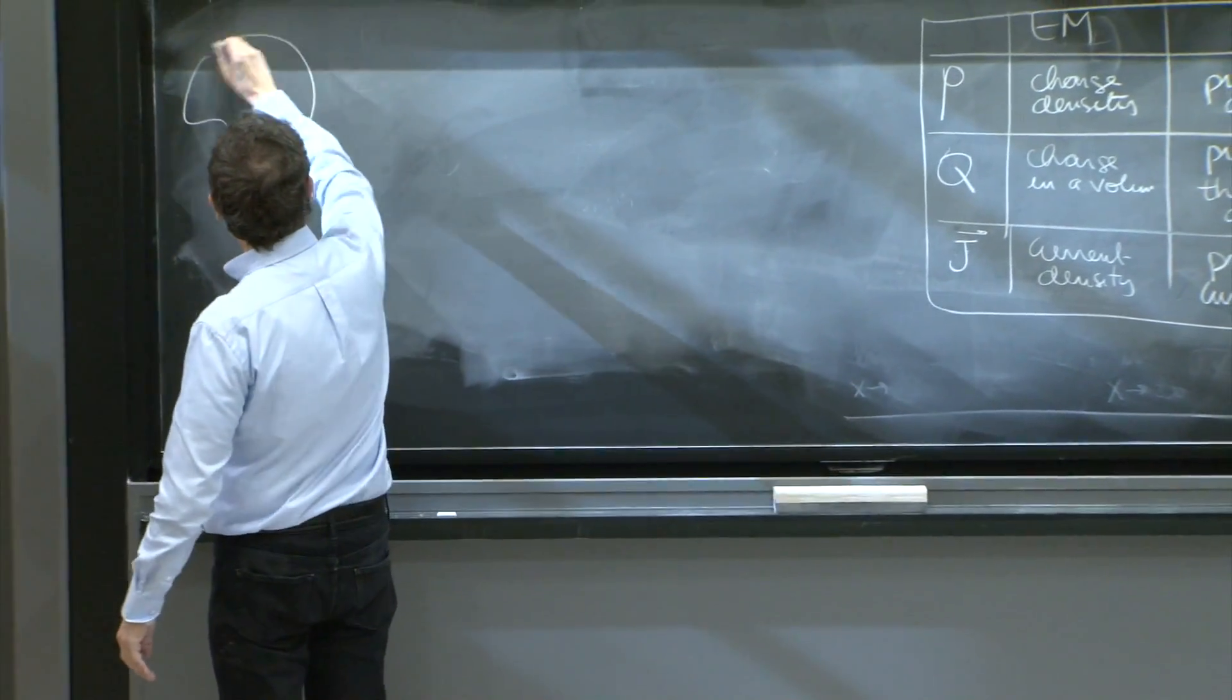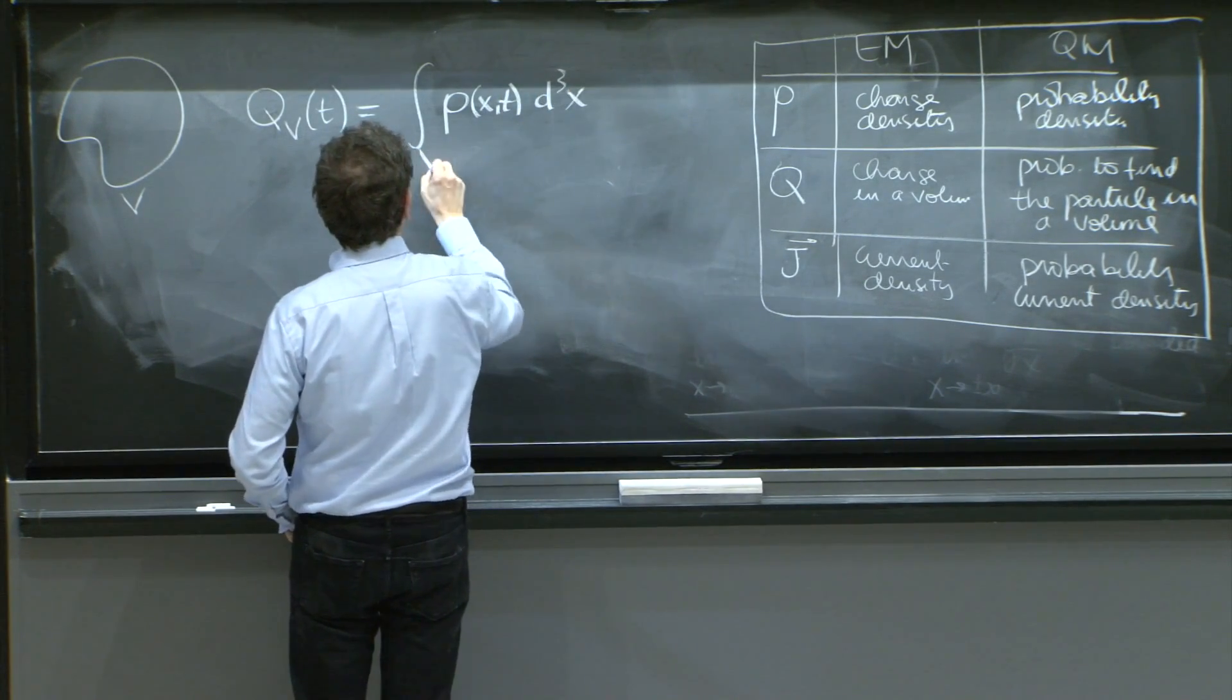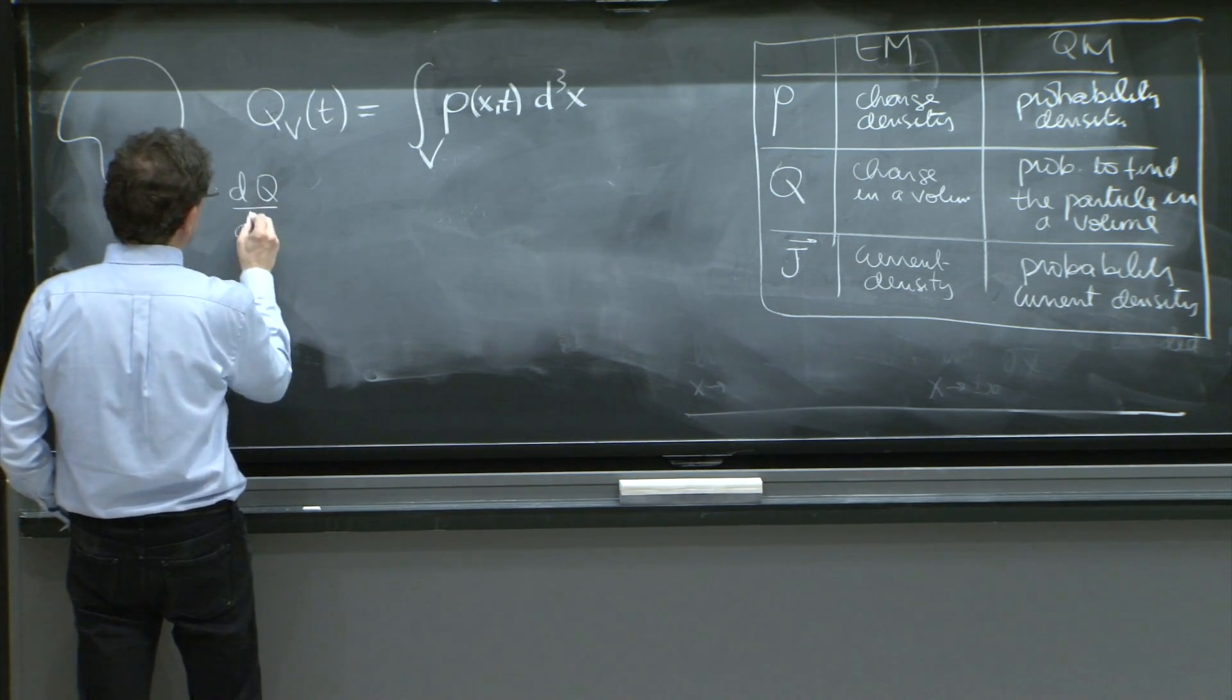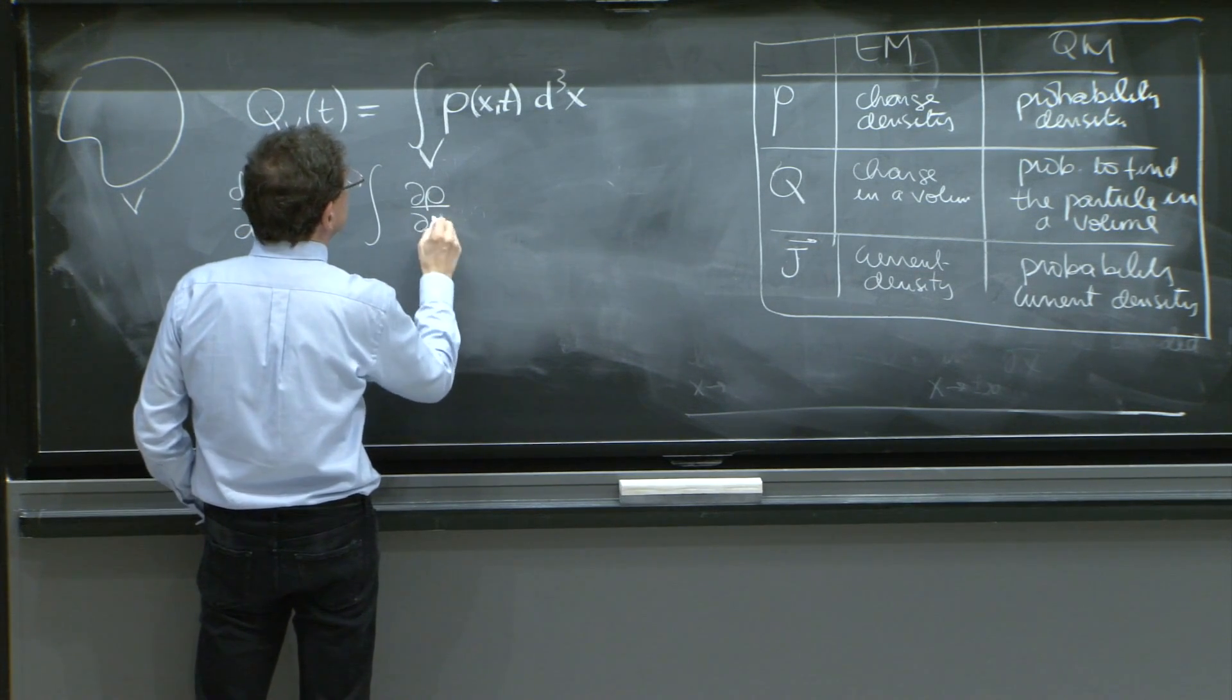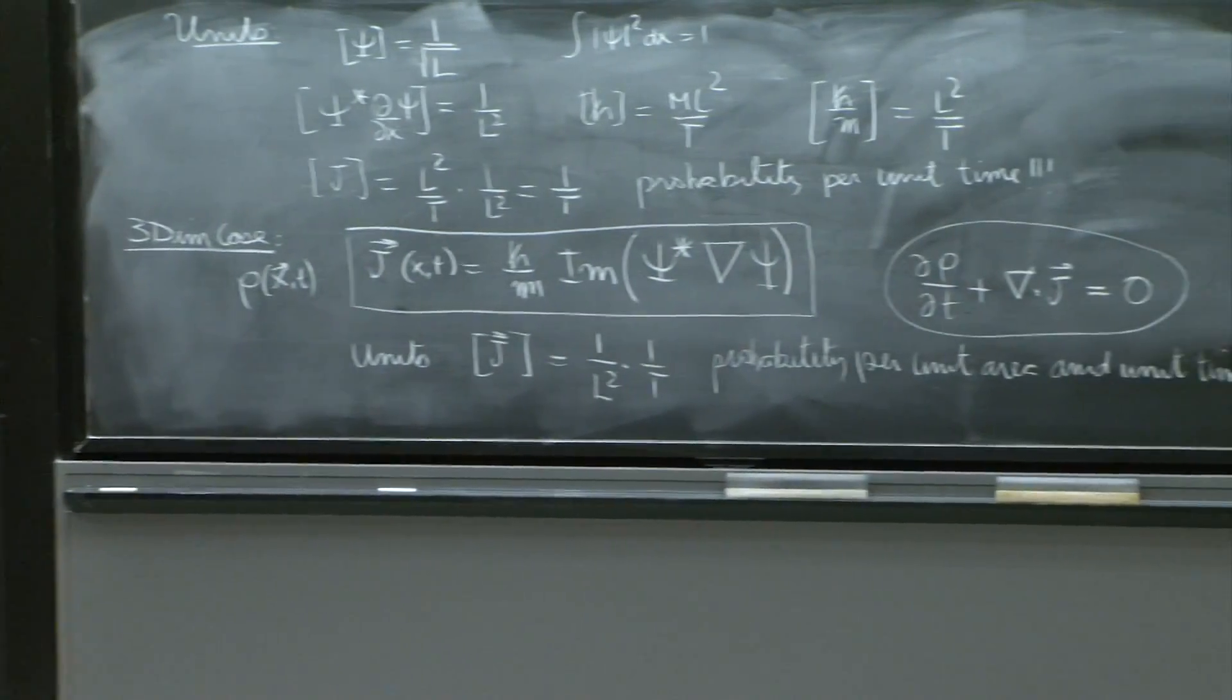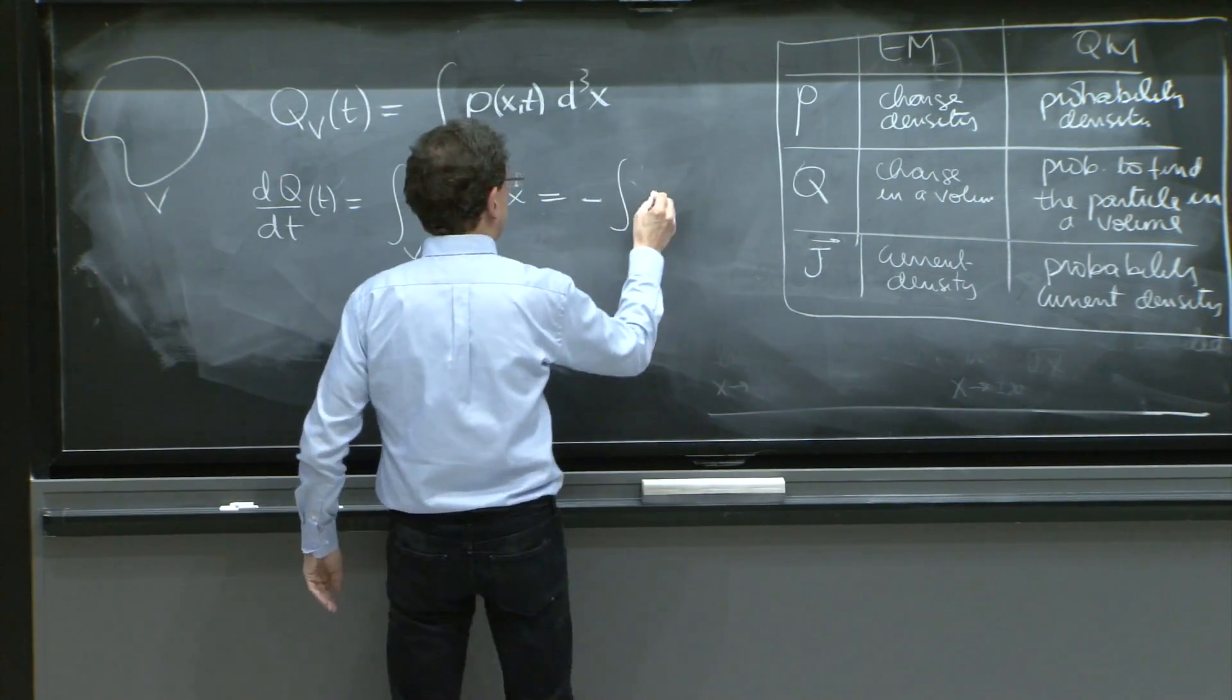Suppose you have a volume and you define the charge inside the volume. When you say, OK, does this charge change in time? Sure it could. So, dq dt is equal to integral d rho dt d cube x over the volume. But d rho dt by the current conservation equation, that's the equation we're trying to make sure your intuition is clear about.